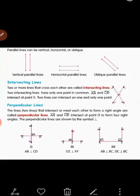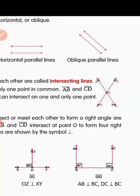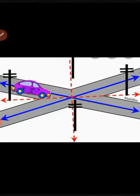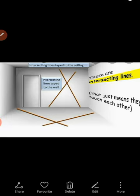Next concept is intersecting lines. Two or more lines that cross each other are called intersecting lines. You can see here lines A, B and C, D. Both lines intersect or cut each other at point X. So these two lines, A, B and C, D, are intersecting lines. You can see examples of intersecting lines on the floor and on the wall — intersecting lines that just touch each other.